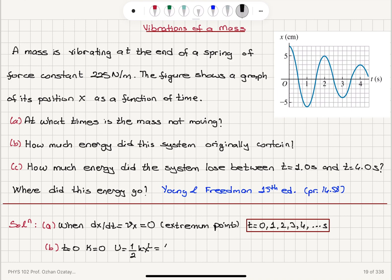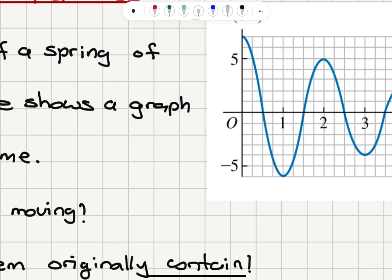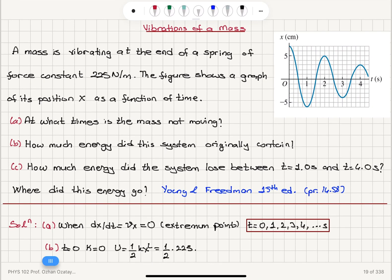This is one over two times 225 newtons per meter times x, where x is, as we can see here from the plot, seven centimeters. So it is seven times 10 to minus two meters squared. This gives us for the energy 0.55 joules.